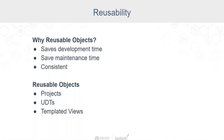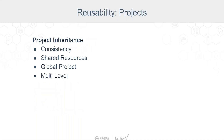At the project level, Ignition 8 introduced project inheritance. If you want a consistent navigation header or want to share scripts or views across all of your projects, there's no need to copy and paste — just consider creating a global project for all your shared resources. You are not limited to one global project; you can use multiple levels of inheritance to build your resource library.